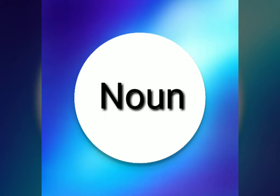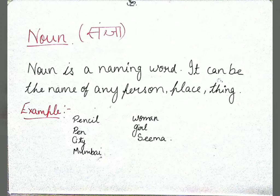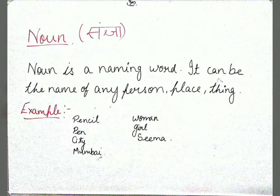What is a noun? Noun ko hum Hindi mein Sangya bhi kehte hain. A noun is a naming word — a word that is the name of a person, place, or thing. Examples are: pencil, pen, city, Mumbai, woman, girl, or Seima. Pencil and pen are names of things; city and Mumbai are places; woman, girl, and Seima are persons. Whatever is the name of any thing, place, or person, we call it a noun.